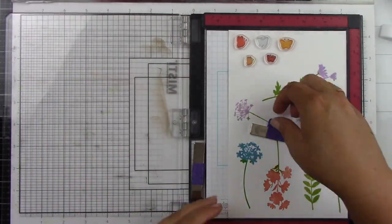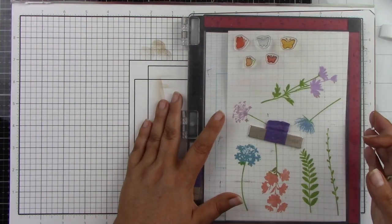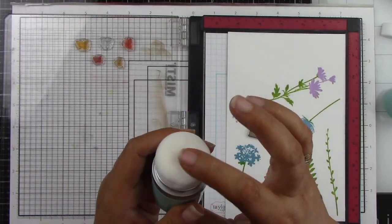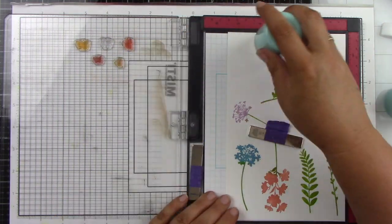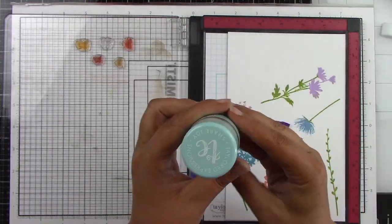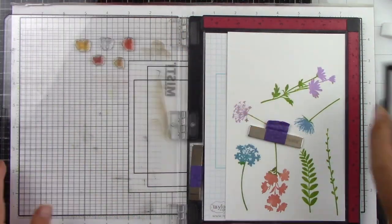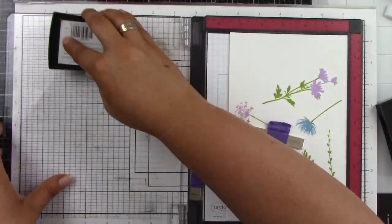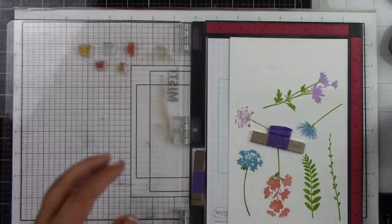So now I'm going to stamp the cute butterflies that are inside there, and I'm going to use the new powder tool from Taylored Expressions. Super cute. You don't have to rub it. You just kind of pounce it, and you get more than enough powder.